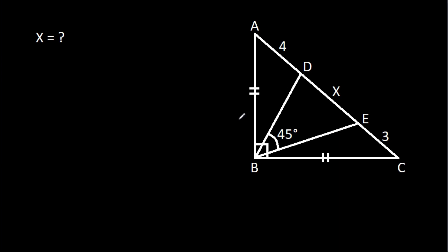In this video, we have been given a right angle ABC, where AB is equal to BC, and angle DBE is 45 degrees. AD is 4, CE is 3, and BE is X. We have to find X.